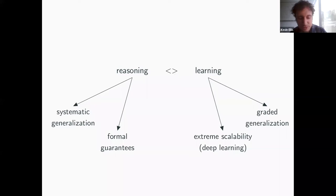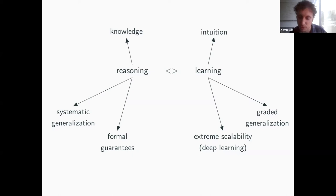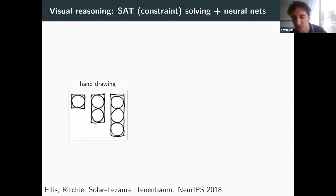For reasoning, we can get things like formal guarantees — if it's a program, we can formally verify properties of the program. But learning, particularly deep learning, has extreme scalability, at least in the modern learning toolkit. My colloquial way of thinking about these things: reasoning is really about knowledge, both how we acquire and deploy it, and learning is really about the acquisition and use of intuitions about things we can acquire from statistics.